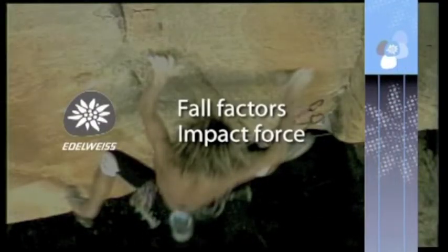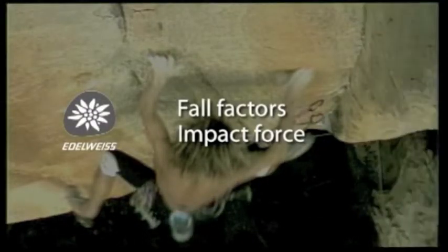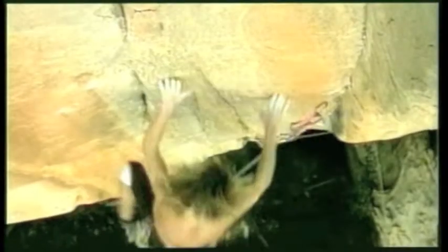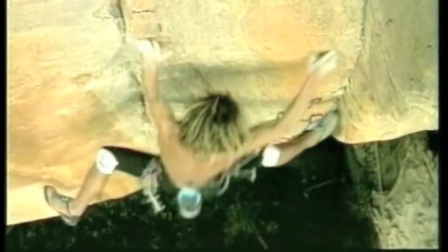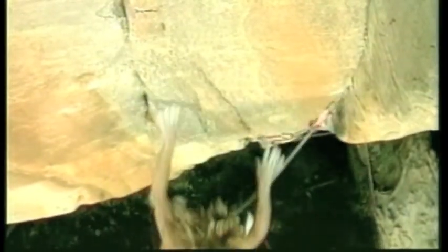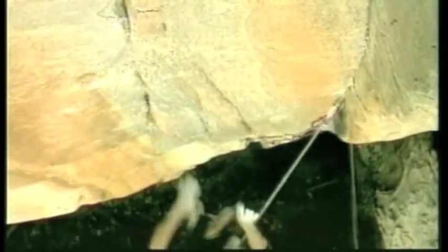Fall Factors and Impact Force. In climbing, the fall factor is the value which defines the severity of a fall, and in consequence its degree of risk and the consequences for the team on the rope. This theoretical value lies between 0 and 2 in climbing circumstances.